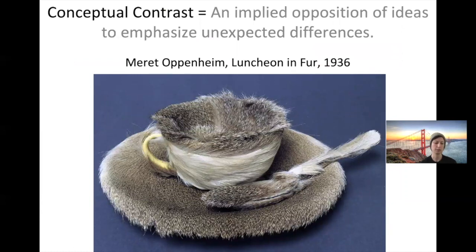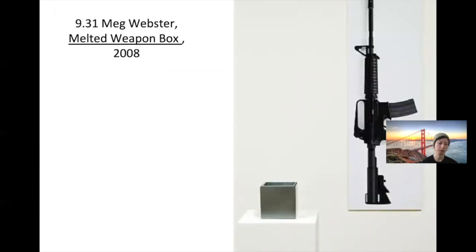Conceptual contrast refers to objects that hold ideas of conflicting subject matter — it's an implied opposition of ideas to emphasize unexpected differences. This fur-covered cup and saucer juxtaposes contrary ideas — fur and a cup — to confuse the viewer and bring us closer into the artwork or further away, depending on your opinion. Meg Webster uses conceptual contrast as well: she juxtaposes an assault rifle next to a vessel in the form of a cubic steel box containing an aluminum cube. She made the cube by melting a rifle and reconstructing it into simple geometric volumes — two very different options of use — employing both visual and conceptual contrast.